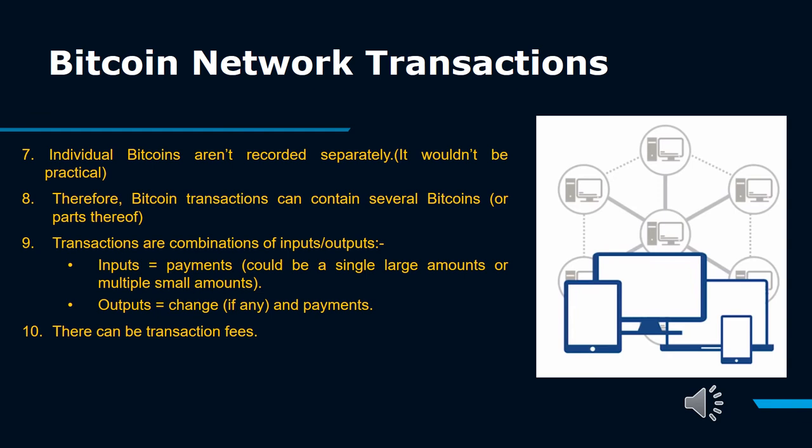The actual amounts are not in decimal numbers but in Bitcoin fractions known as satoshis. Known as the UTXO set or UTXO database, all the UTXOs on the blockchain represent the total number of Bitcoins in existence. The actual number constantly changes because UTXO inputs are removed and UTXO outputs are added. See Satoshi, Coinbase Transaction, and Bitcoin Script.